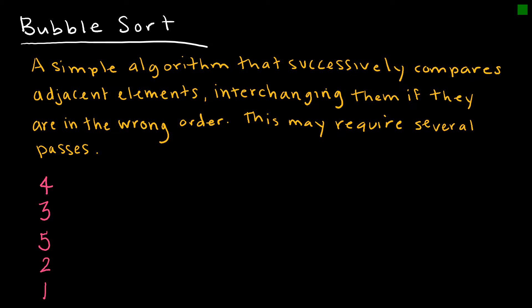The first one we're going to look at is the bubble sort algorithm. Bubble sort basically compares adjacent elements, interchanging them if they're in the wrong order. It may require several passes, so let's look at this one together. In pass one, I would look at four and three.